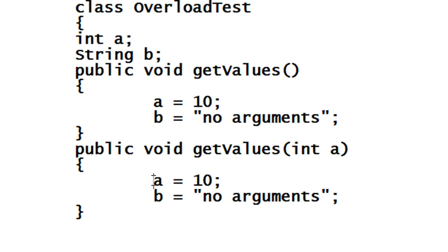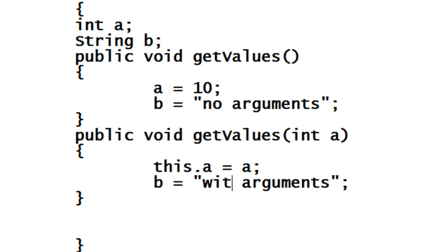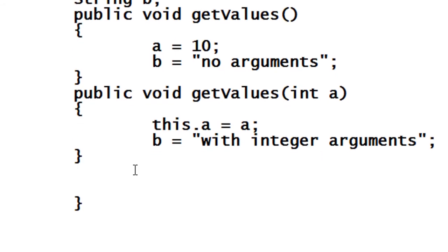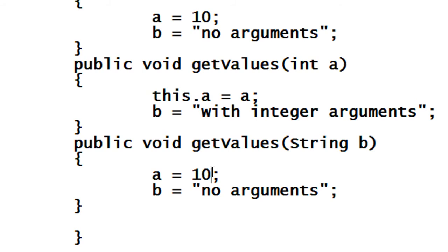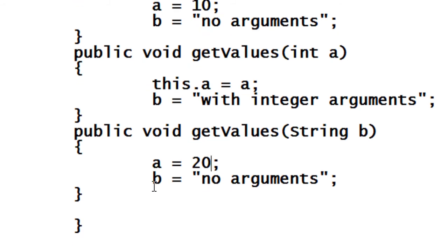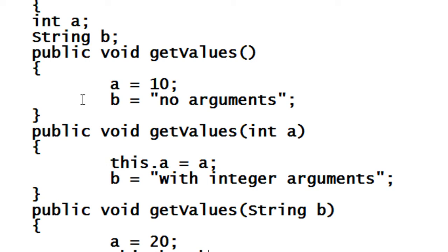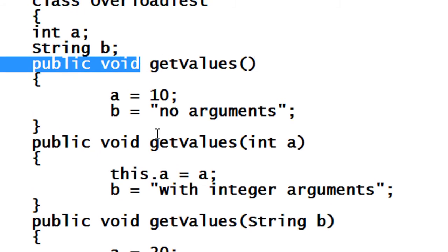In the second version, I assign values from the integer argument — this.a is equal to a. That is the integer argument version. Then I create another method with a string value, where a is equal to 20 and this.b is equal to b. So now you can see there are three overloaded definitions of getValues in this class.